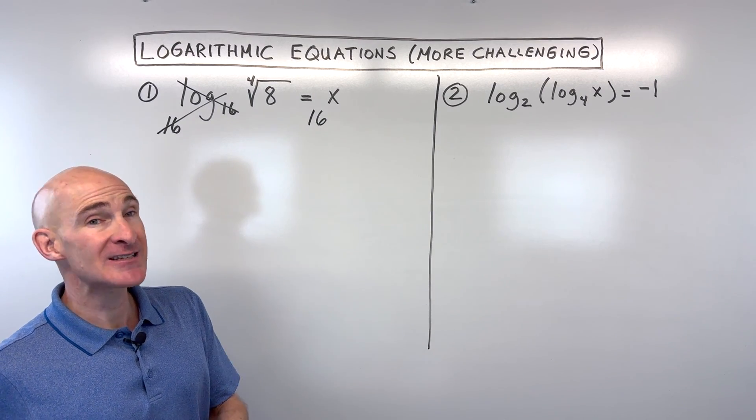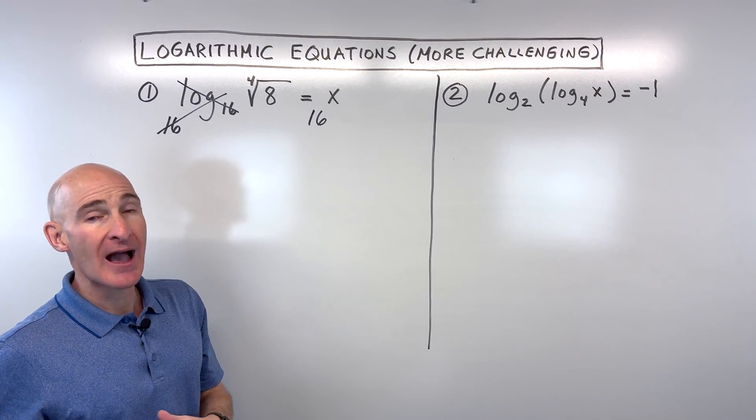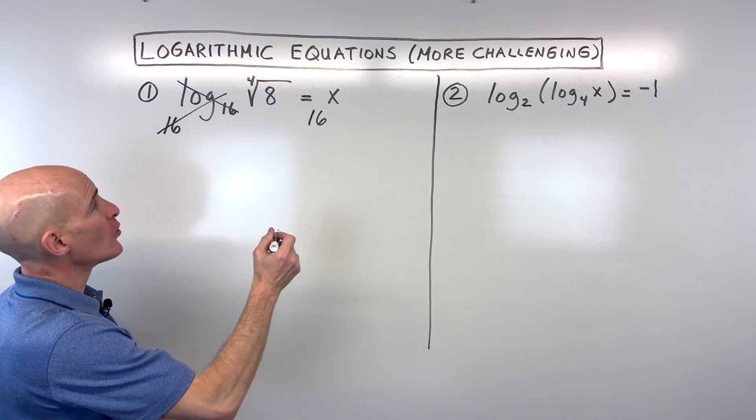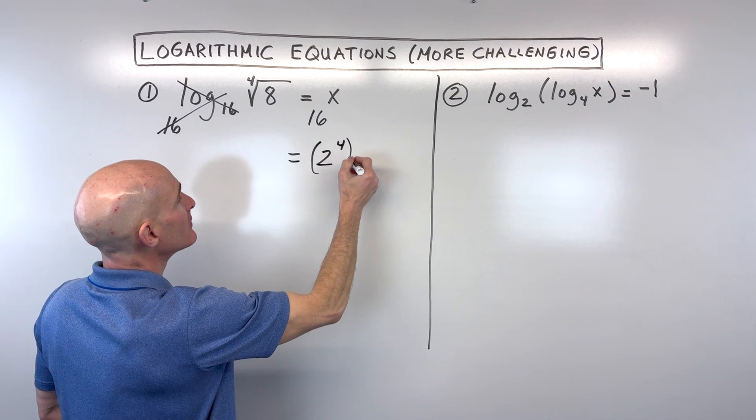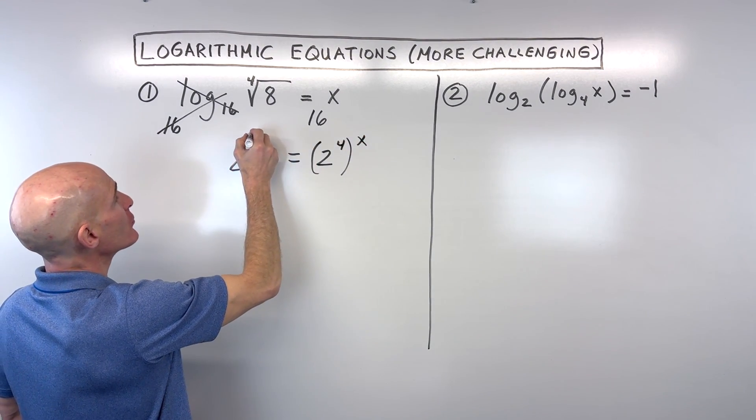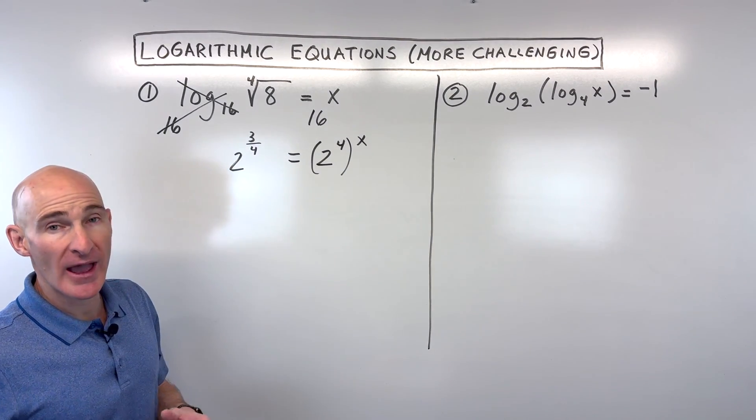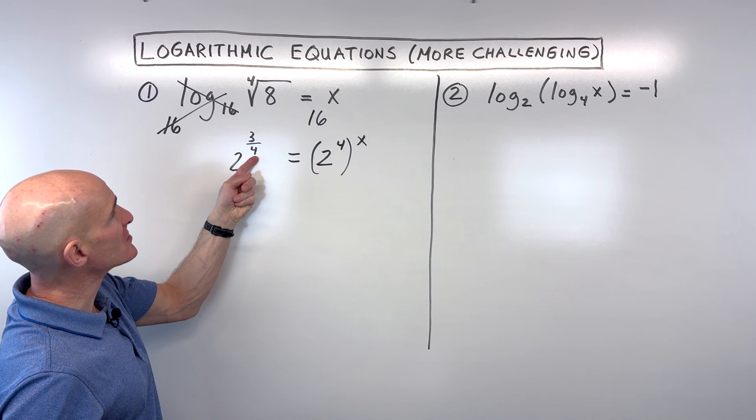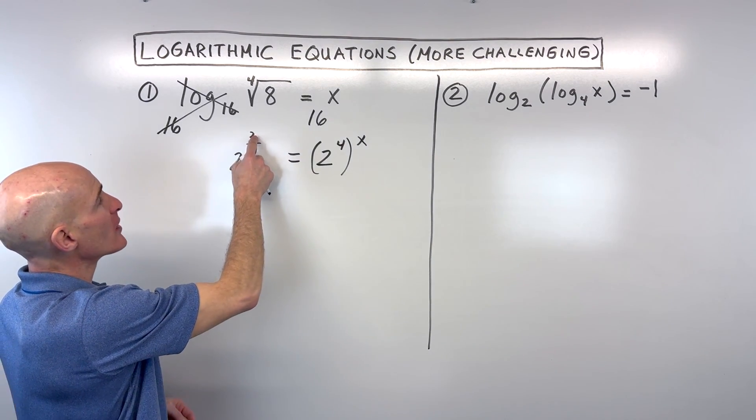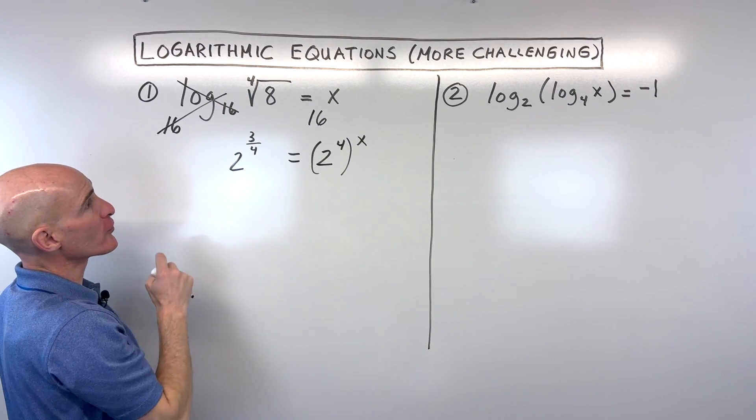Now when I look at 16 and 8, I can see that I could rewrite these using a common base of 2. So 16 is actually like 2 to the fourth power, 8 is 2 to the third power, and then this is the fourth root. So here we're talking about rational exponents. Remember, this index or root goes in the denominator, and the numerator, the exponent, is the power. So you can see 2 cubed is 8, and then we've got the fourth root of that.